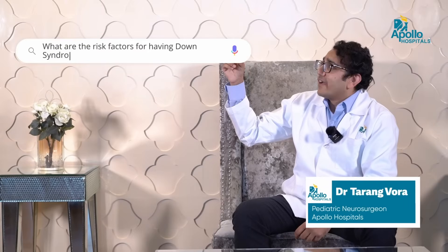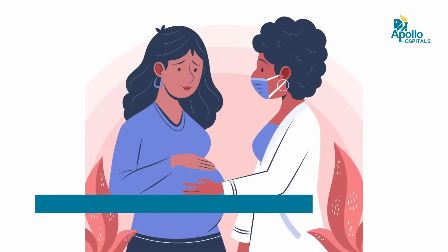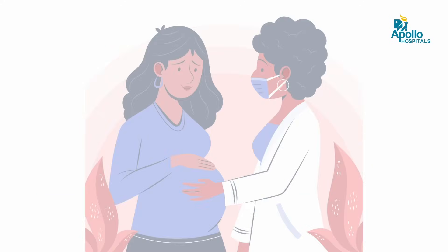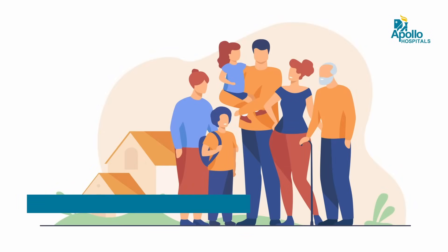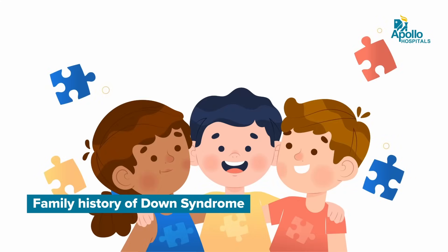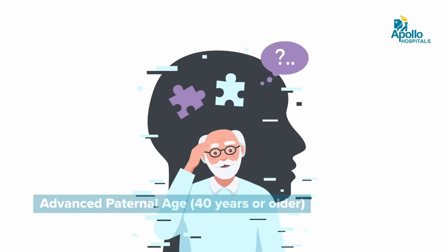What are the risk factors for having Down syndrome? We have three important risk factors. The first one is advanced maternal age, that is the mother getting pregnant after 35 years of age. Second, if there is somebody in the family who has had Down syndrome, then the likelihood of your child developing Down syndrome goes higher. And third is advanced paternal age — if the father is also quite old, that can also predispose a child to have Down syndrome.